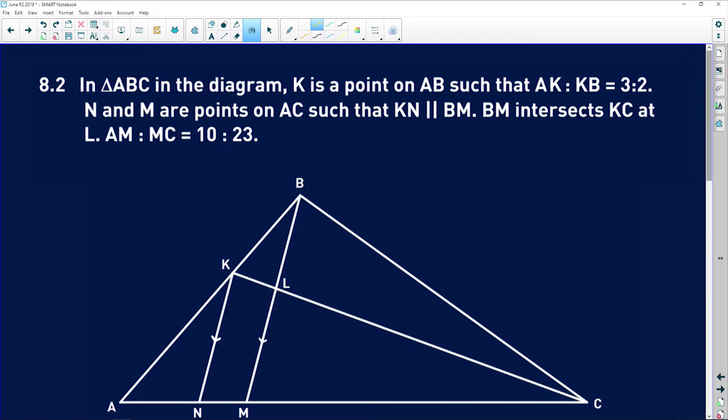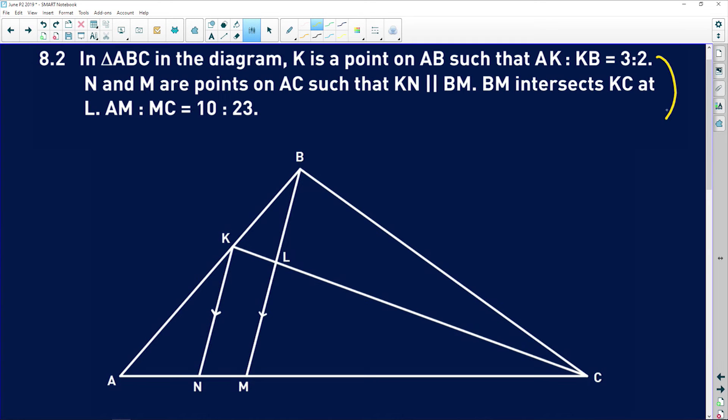So 8.2 says, in triangle ABC in the diagram, K is a point on AB such that AK to KB is 3 to 2. So this ratio, you can also say that AK over KB is equal to 3 over 2. If we put that on our diagram, we don't know what the actual length is. We just know that the ratio is 3 to 2. So the actual length is 3 times something, and the actual length of that one is 2 times something.